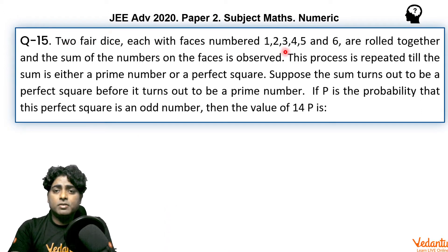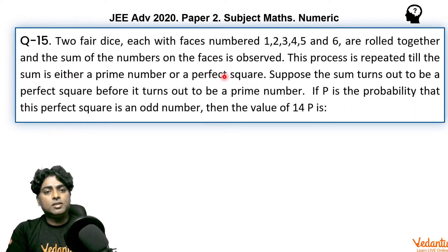It says two fair dice each with faces numbered 1, 2, 3, 4, 5, 6 are rolled together and the sum of the numbers on the faces is observed. Obviously the sum can be from 2 to 12. This process is repeated till the sum is either a prime number or a perfect square. So prime numbers in this category can be 2, 3, 5, 7 or 11. Perfect square can be 4 or 9, isn't it? It further says suppose the sum turns out to be a perfect square before it turns out to be a prime number. It is also given, if capital P is the probability that this perfect square is an odd number, then the value of 14P is.